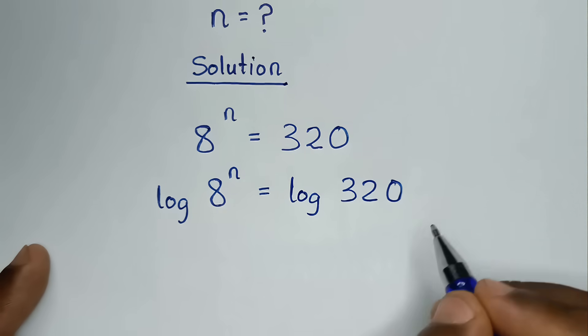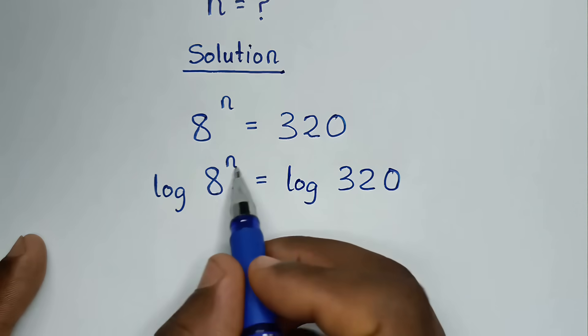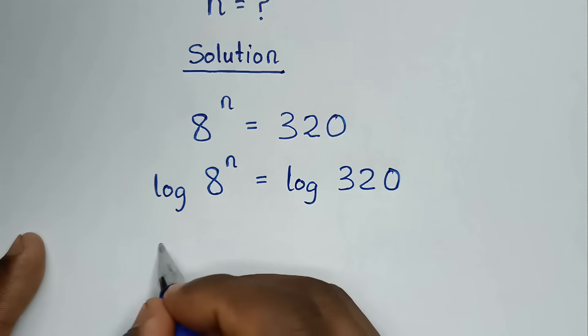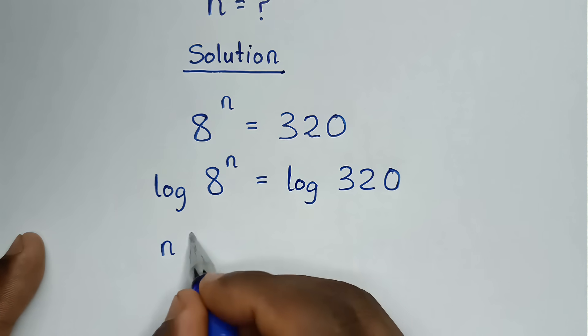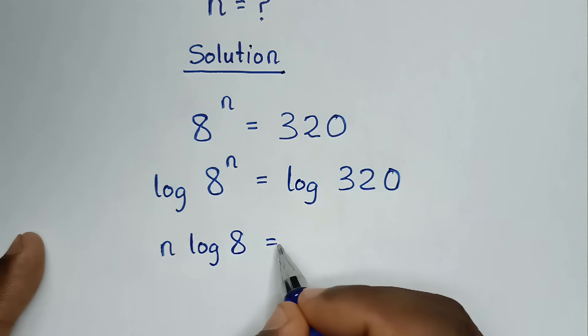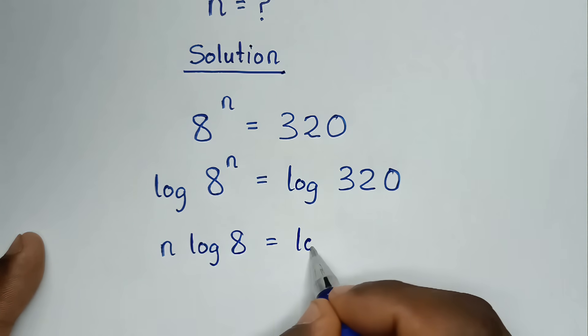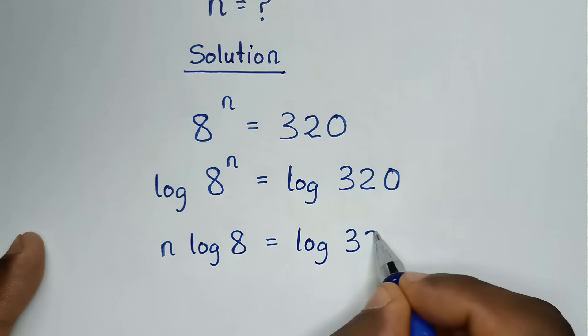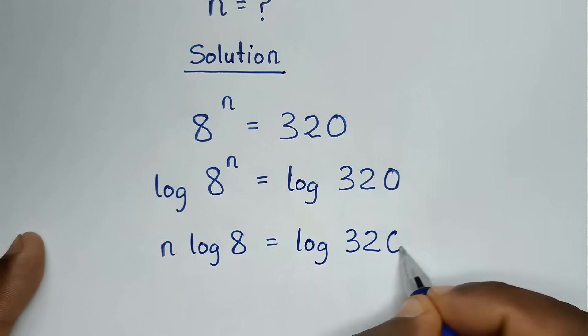Then, this power of n here will move to the base. So it will be n log of 8 is equal to log of 320.